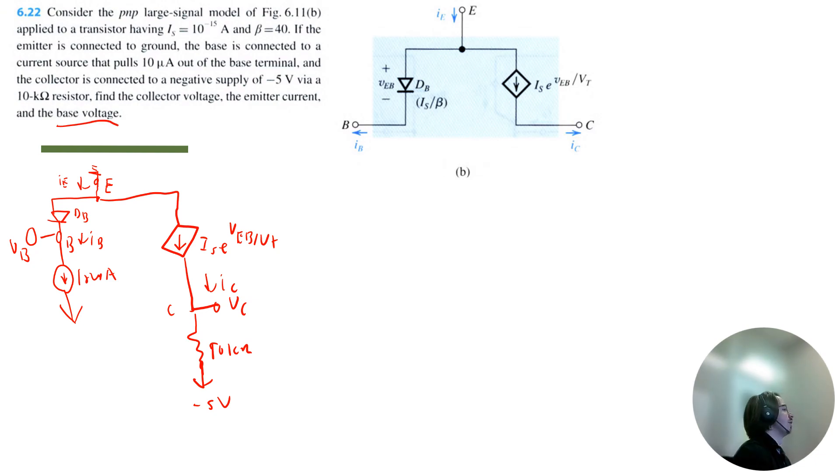And I'm actually going to start solving for the base voltage first. Because we can see that the voltage at the emitter minus the voltage at the base is equal to VEB. And the voltage at the emitter is just zero because it's grounded. So basically, the voltage at the base is going to be equal to the negative value of the voltage drop from emitter to base, which is the voltage across this diode.